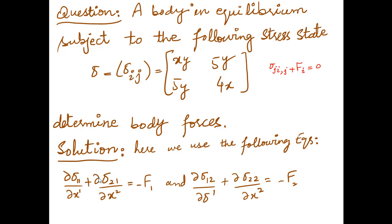When you write them in 2D, you have two equations. The first: partial sigma_11 by partial x1 plus partial sigma_21 by partial x2 equals minus f1. The second: partial sigma_12 by partial x1 plus partial sigma_22 by partial x2 equals minus f2.